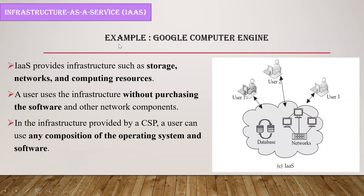Next is infrastructure as a service, or IaaS. Here we have taken Google Compute Engine as an example. IaaS provides infrastructure like storage, networks, and computing resources. It produces all these resources to the user by default. Users can use all that infrastructure — they need not purchase or pay; they can directly use it with internet availability. A cloud service provider is available in IaaS where the user can use any kind of operating system and software, as the provider takes all resources from databases and allocates them through networks for different users.